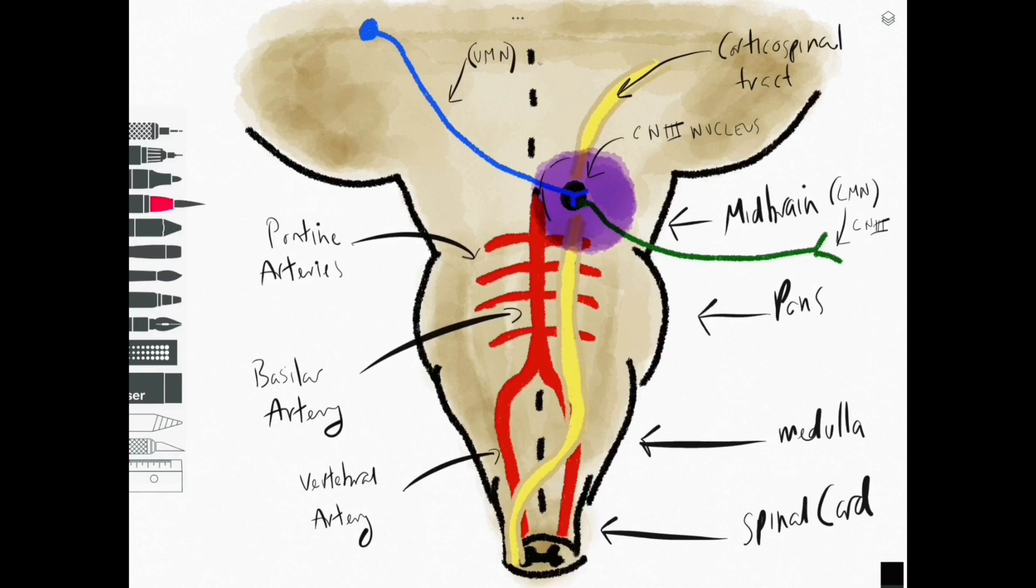Cranial nerve number three in this example, and we are going to have contralateral deficits of function related to the corticospinal tract.